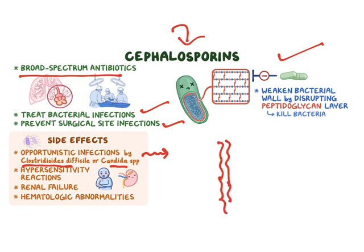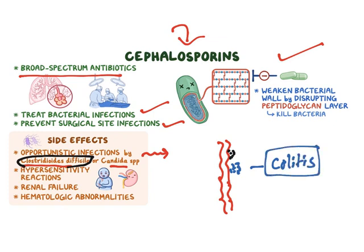If Clostridium difficile is present in the gut or large intestine, cephalosporins inhibit regular bacterial growth but cannot affect Clostridium growth. As bacterial growth is reduced, Clostridium numbers increase, which may cause pseudomembranous colitis — colon inflammation. This is called an opportunistic infection or superinfection, and is one of the major problems with cephalosporins.